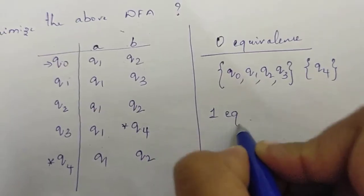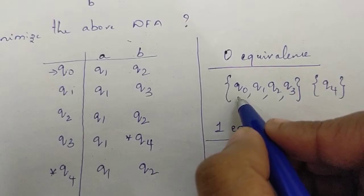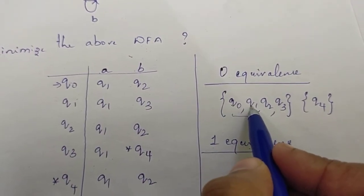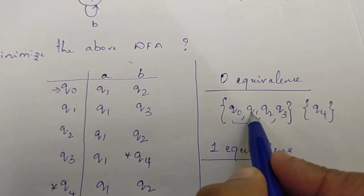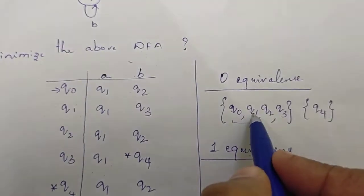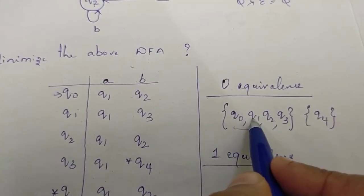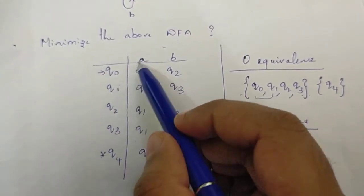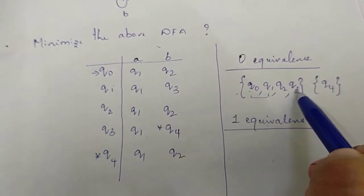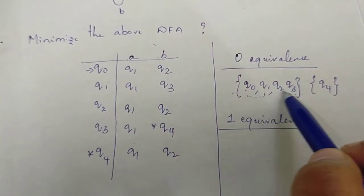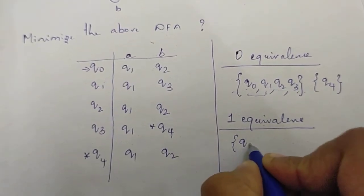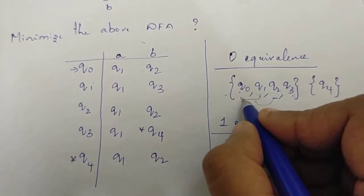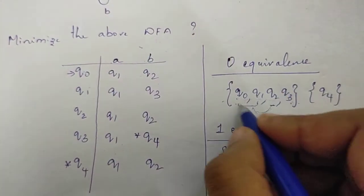Next, we compute one equivalence using zero equivalence. For Q0 on A, it goes to Q1, which is in the non-final set. Q1 on A goes to Q1, also in the non-final set. Q1 on B goes to Q3, also in the non-final set. Q2 on A goes to Q1, Q3 on B gives Q4. We check if Q2 and Q3 produce the same result in each partition set.